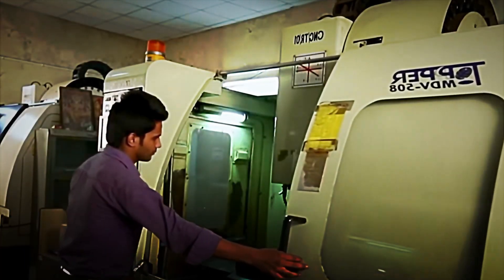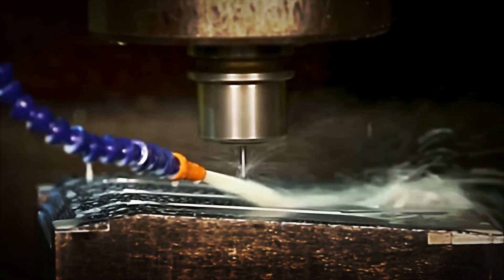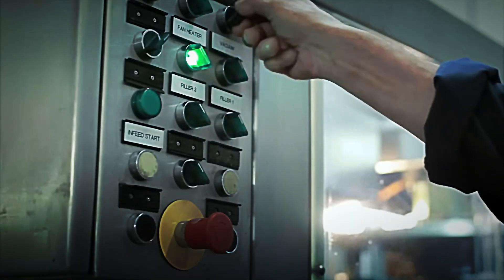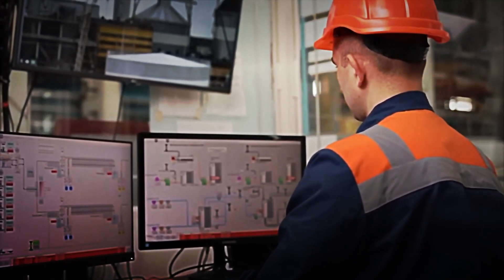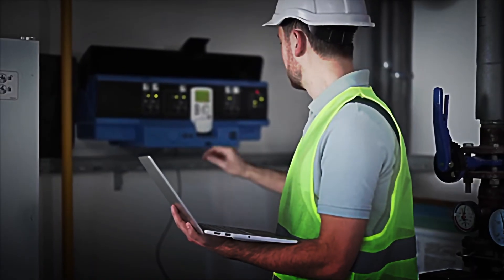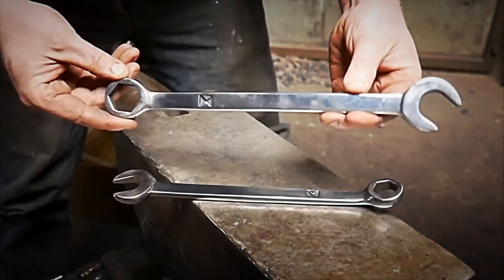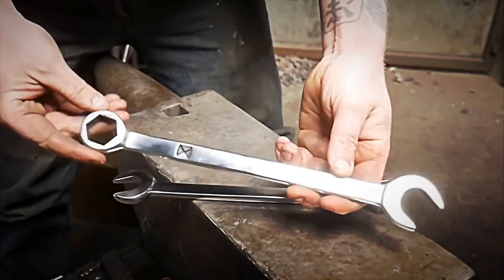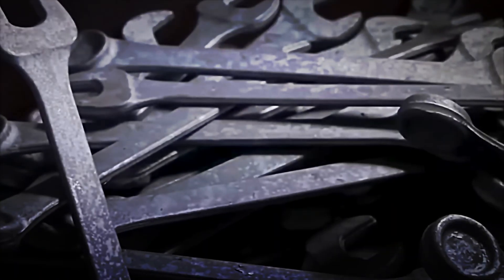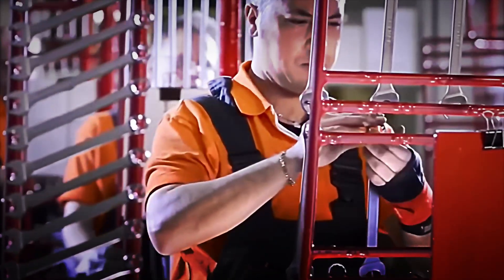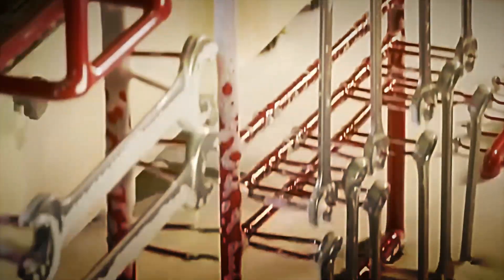Each coating is rigorously inspected. To ensure uniform thickness and compliance with technical specifications, x-ray measuring equipment is used, capable of detecting variations of microns in real time. Furthermore, as part of the quality control process, salt spray tests are performed—an accelerated test that exposes the tool to a humid, saline environment for hours or days, simulating years of use under harsh conditions. Only the keys that pass these tests are ready to proceed to the marking and packaging phase.